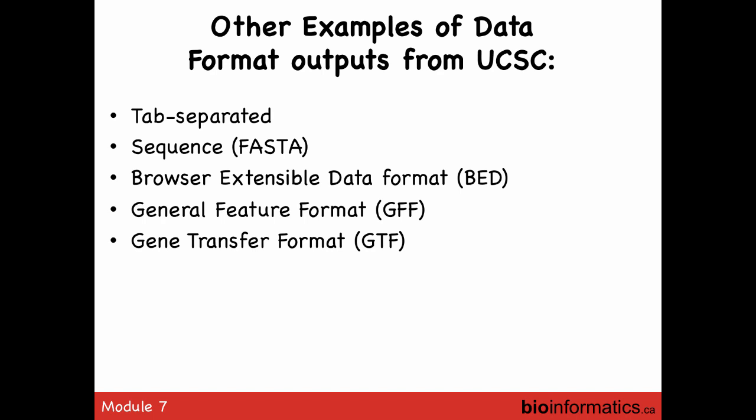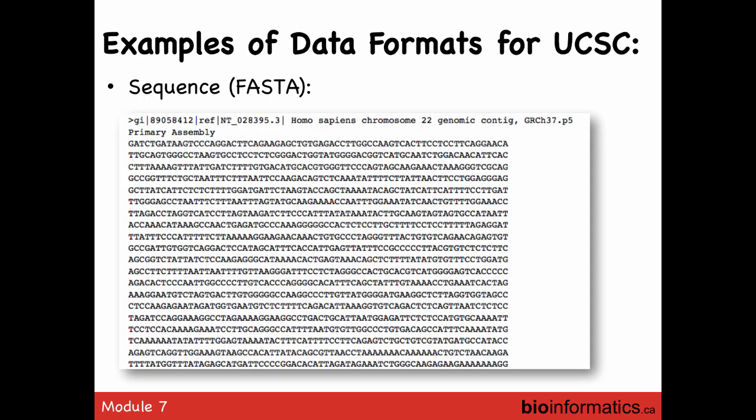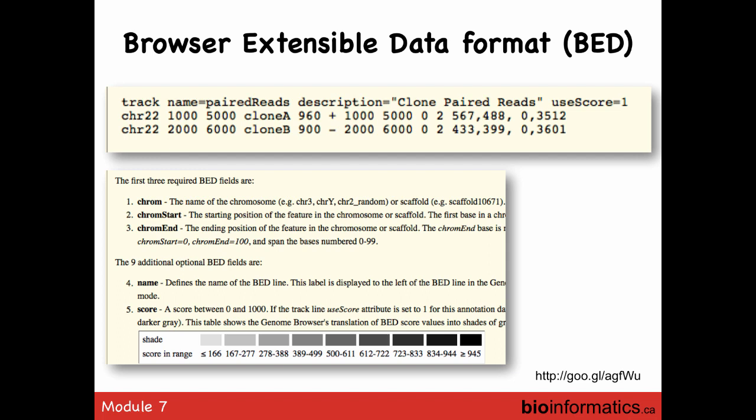Some of the file formats UCSC outputs: FASTA — a greater-than sign, some descriptor, then a nucleotide or protein sequence. BED format — browser extended data format — used by the browser to represent various things. It includes chromosome, start position, stop position, some ID, some score, and so forth.